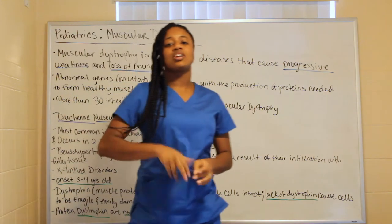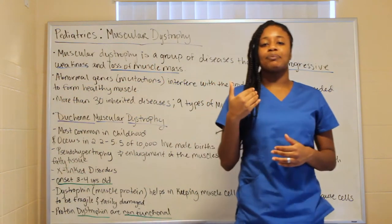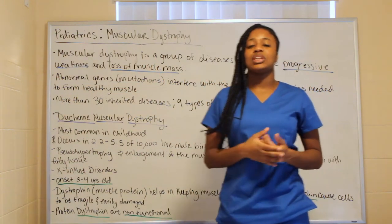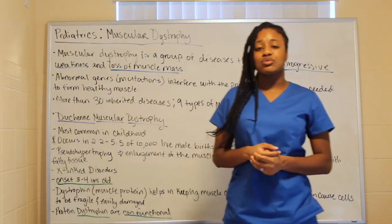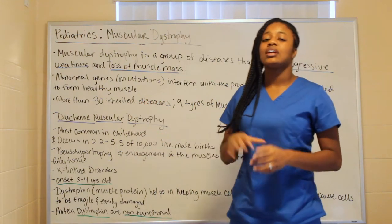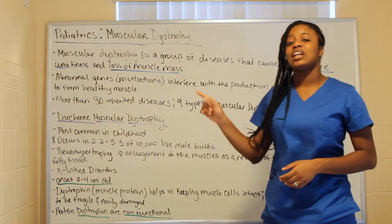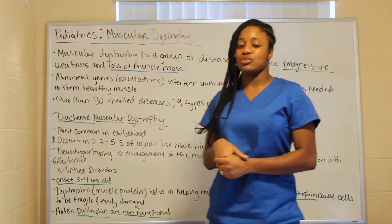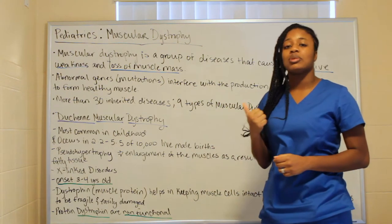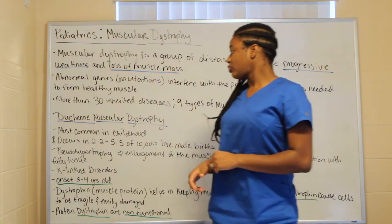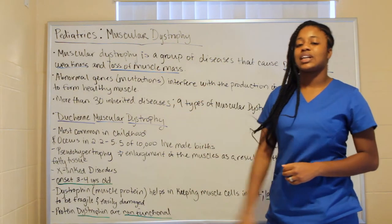We're going to talk about the main two types that are frequently asked about during NCLEX in pediatrics. The first one is Duchenne muscular dystrophy, which is most common in childhood.